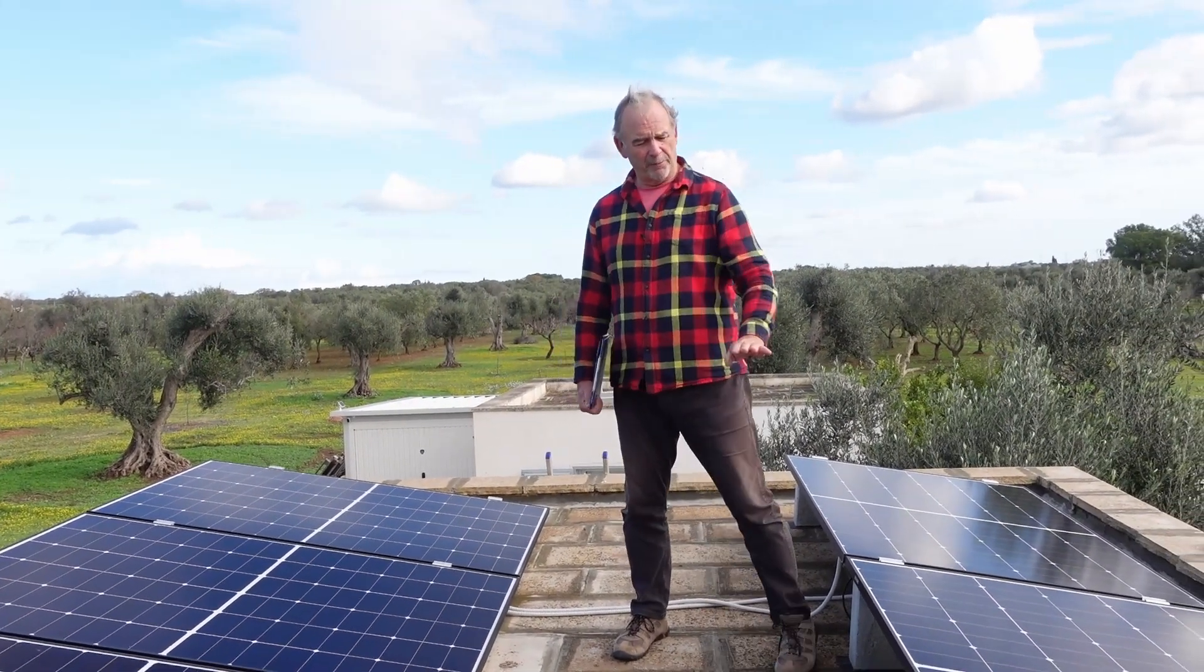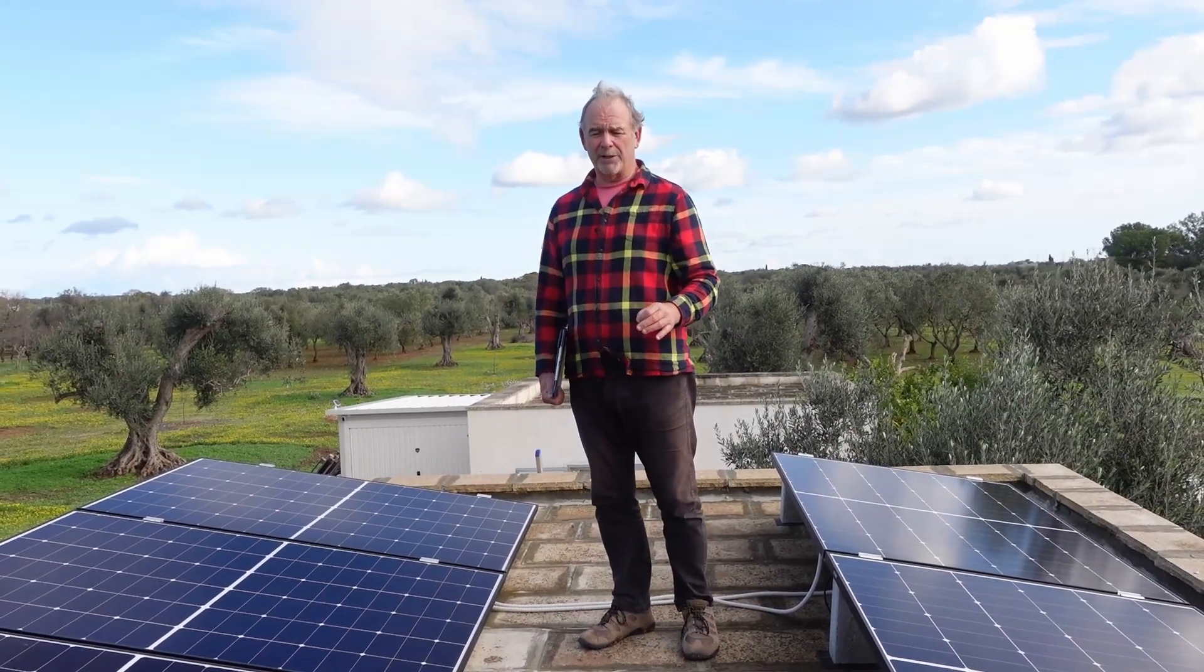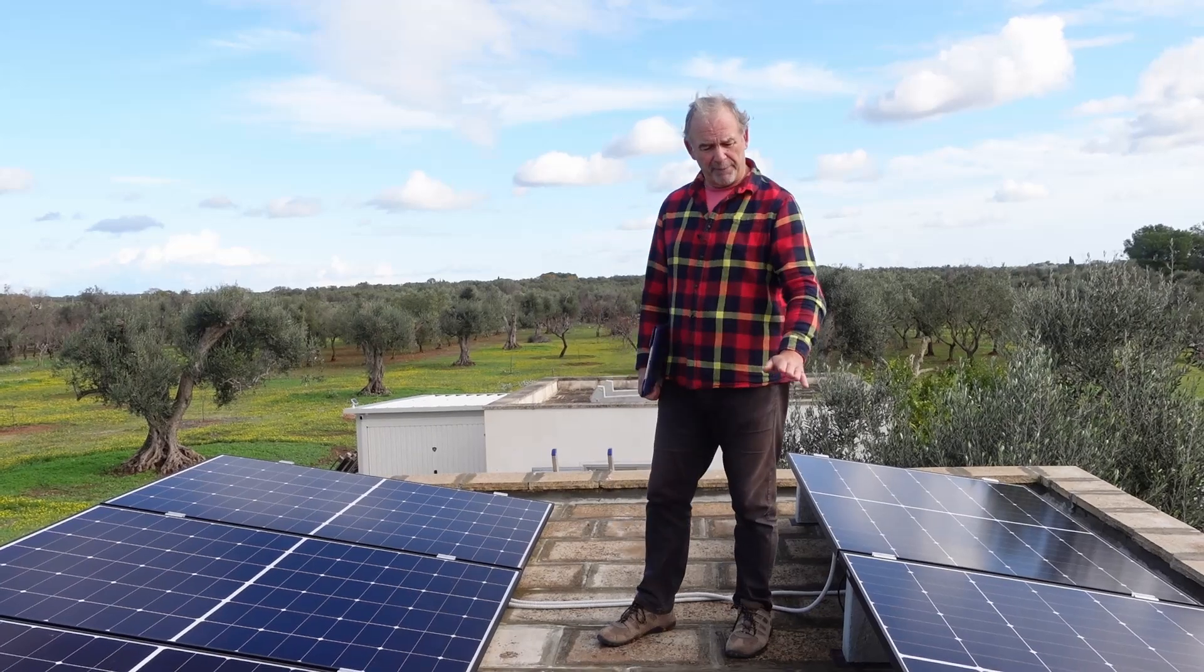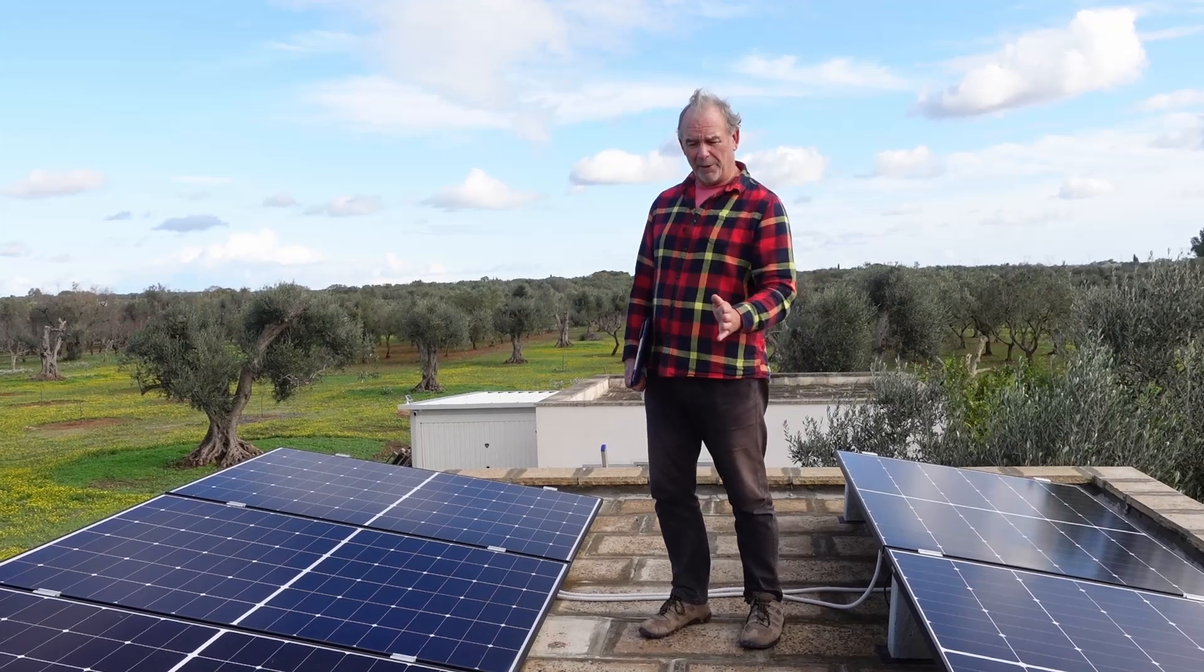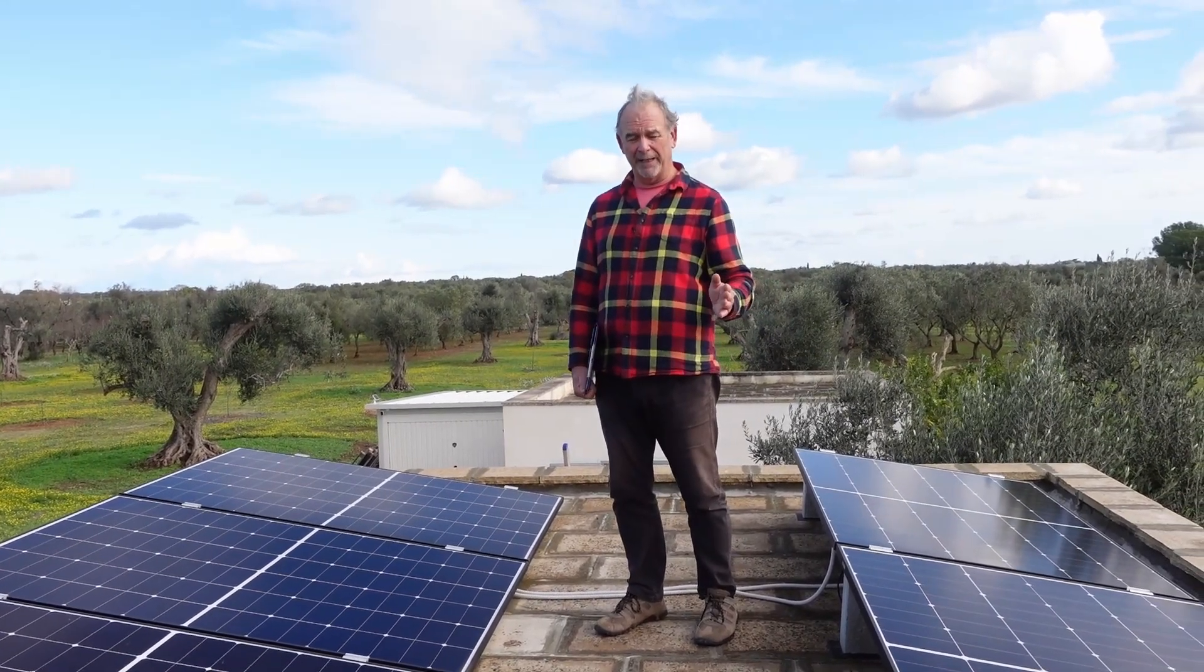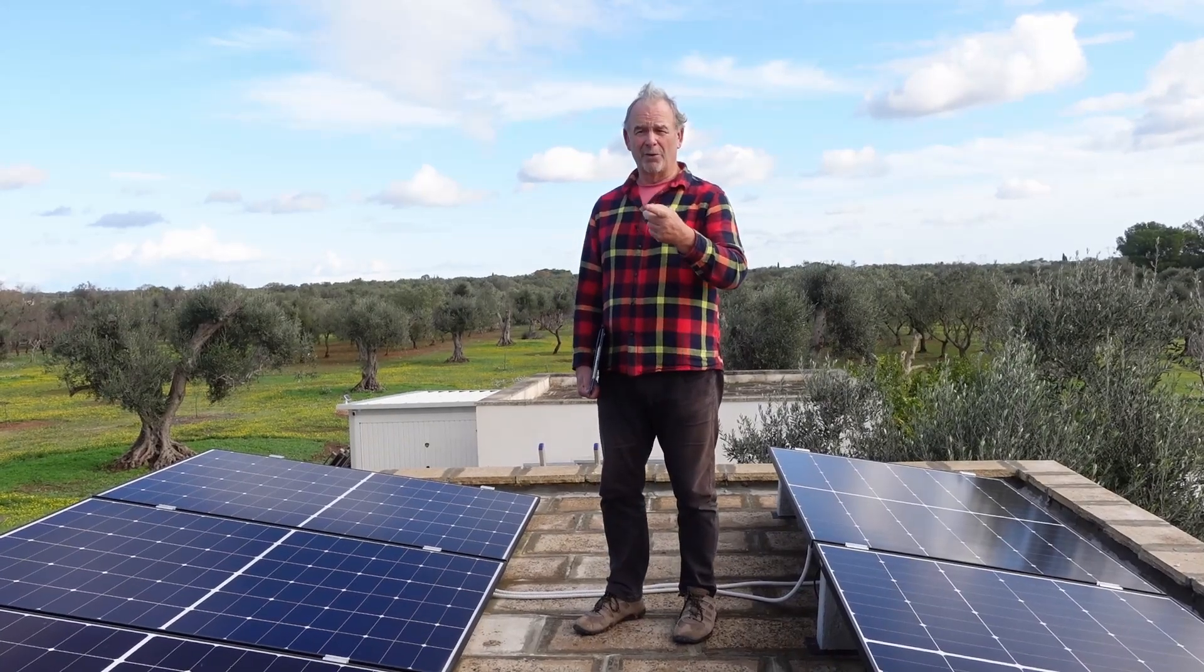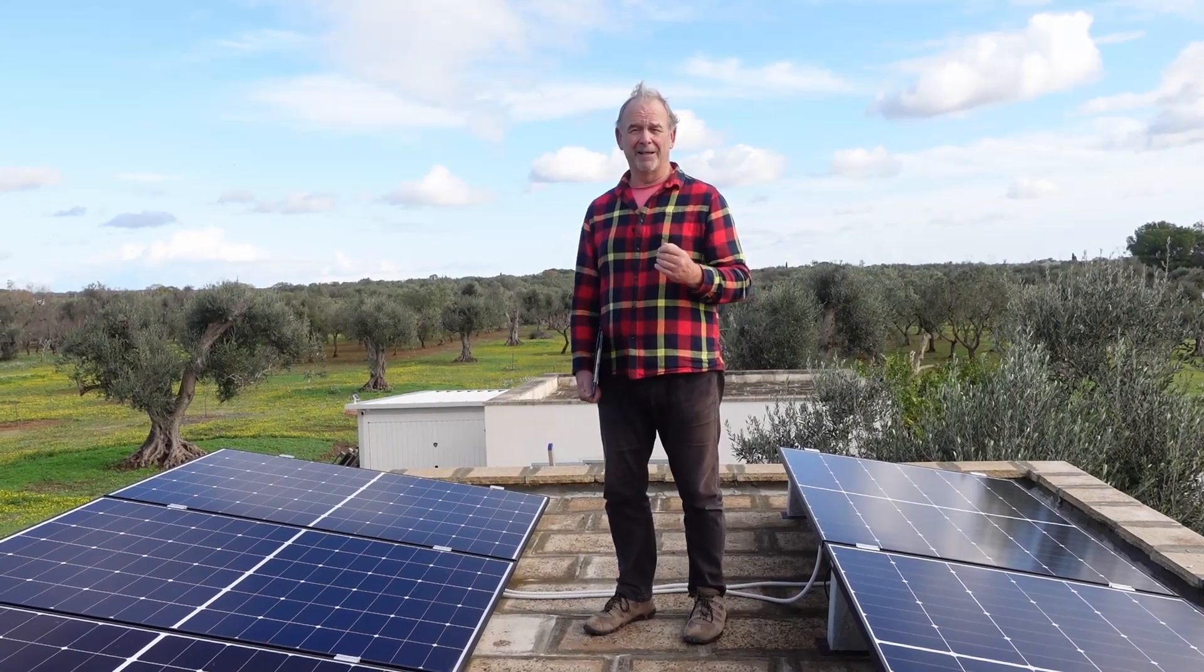I worked out the solar shadow between the top of this panel and the bottom of this panel because I wanted to make sure they were the most efficient throughout the year. I worked out I needed 0.75 meters between the 10-degree panels, and I've actually put a meter between them. I've been up here during several parts of the day to make sure I don't get a solar shadow from the front to the rear panels, and it works perfectly.